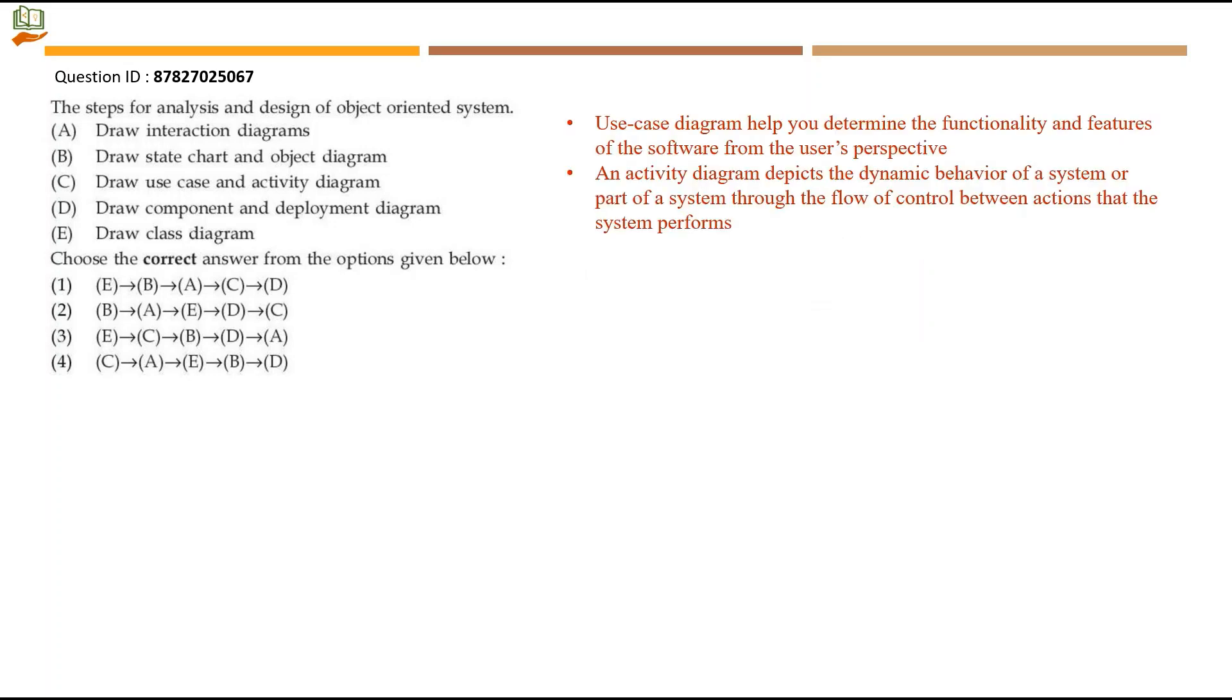Use case diagram helps you determine the functionality and features of the software from user's perspective. So when you solve, you start with the use case. Next, an activity diagram depicts the dynamic behavior of a system or a part of a system through the flow of control between actions that the system performs. So when I have use cases, definitely there will be an activity being followed because this will depict the dynamic behavior of the system. Imagine activity diagram as a flow chart in plain terms. So it is similar to a flow chart.